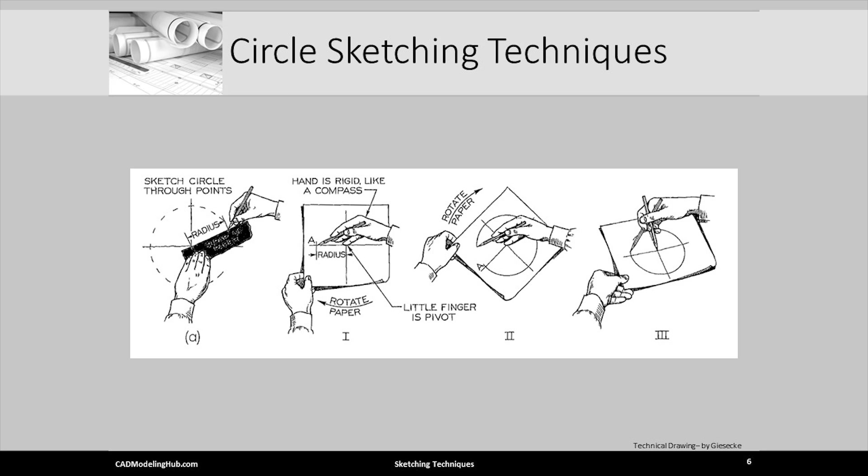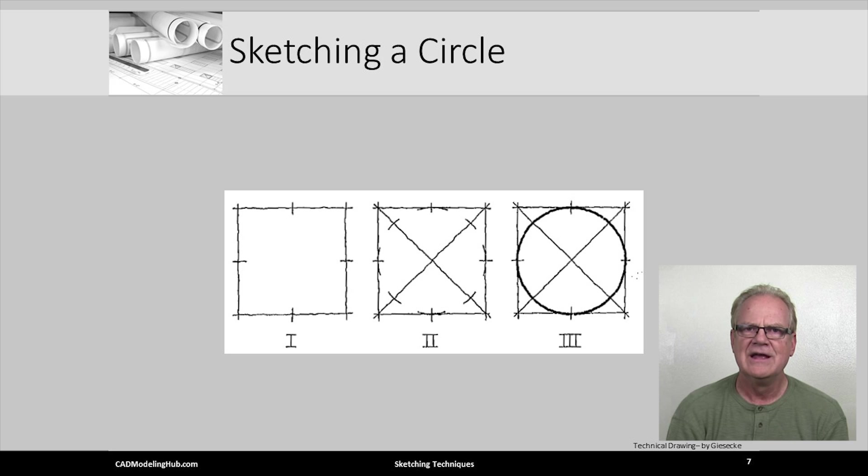A much more common approach to creating arcs and circles is the use of a bounding box. This image illustrates the three steps. Step 1, sketch a square of appropriate size and find the midpoint of each line.